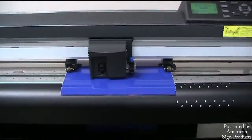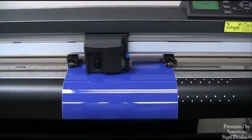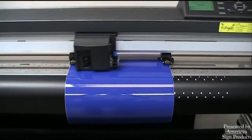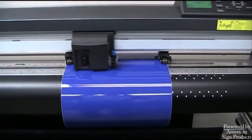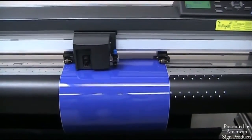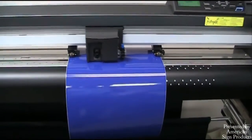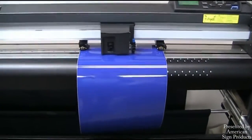Once the information is sent from the computer to the plotter, the plotter will begin to cut, and depending on how intricate the graphic is or what type of material you're cutting will indicate how fast or how slow the plotter will actually react.